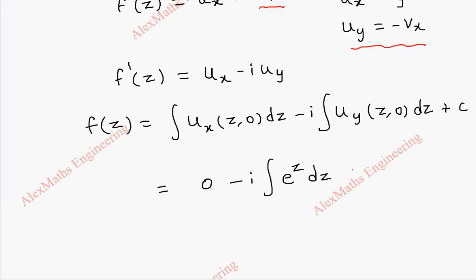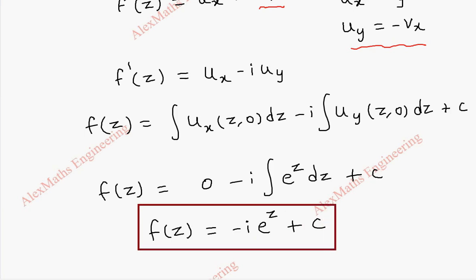At the end we have constant plus C. So finally we get f(z) = -i*e^z + C. The integration is e^z, plus C. Thus we got the analytic function f(z).